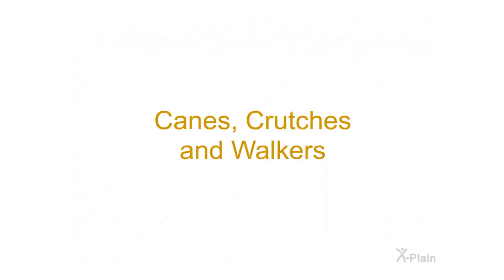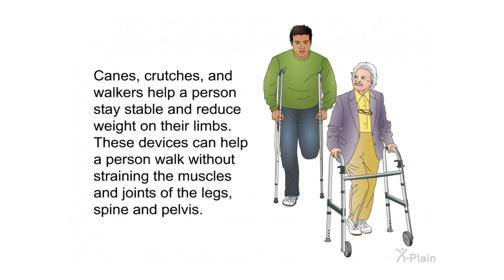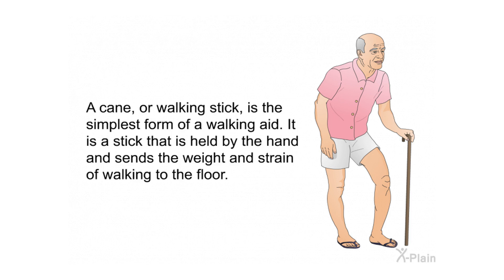Canes, crutches, and walkers help a person stay stable and reduce weight on their limbs. These devices can help a person walk without straining the muscles and joints of the legs, spine, and pelvis. A cane or walking stick is the simplest form of a walking aid. It is a stick that is held by the hand and sends the weight and strain of walking to the floor.